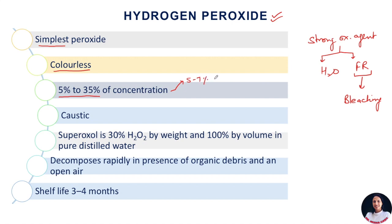It is commonly used in concentrations ranging from 5 to 35%. The low concentration, that is 5 to 7%, is mostly recommended for at-home bleaching techniques. And 25 to 35% is recommended for in-office bleaching techniques.